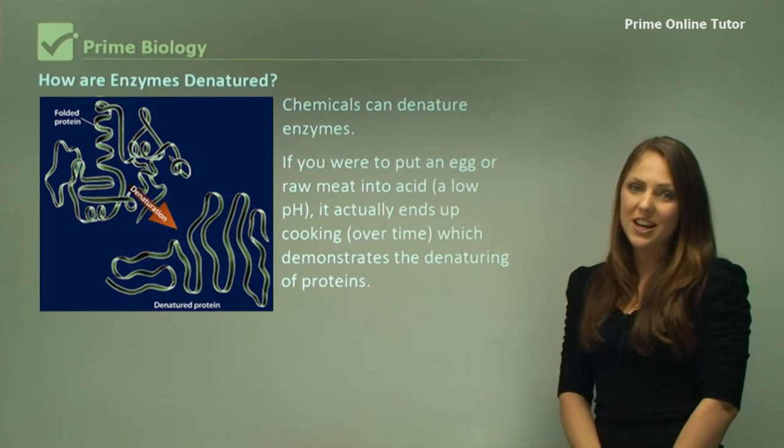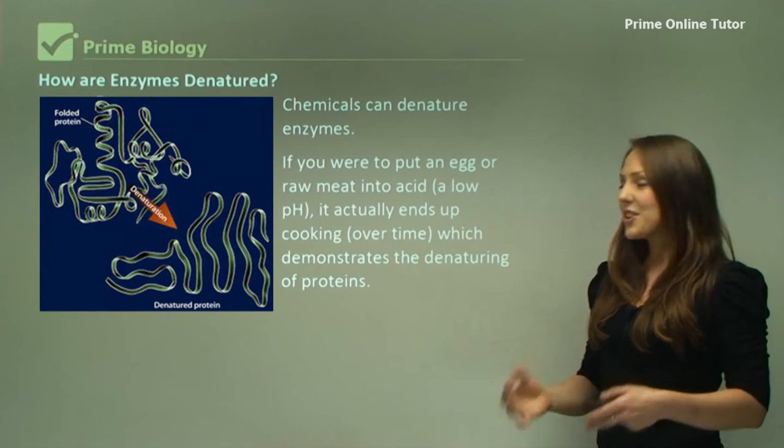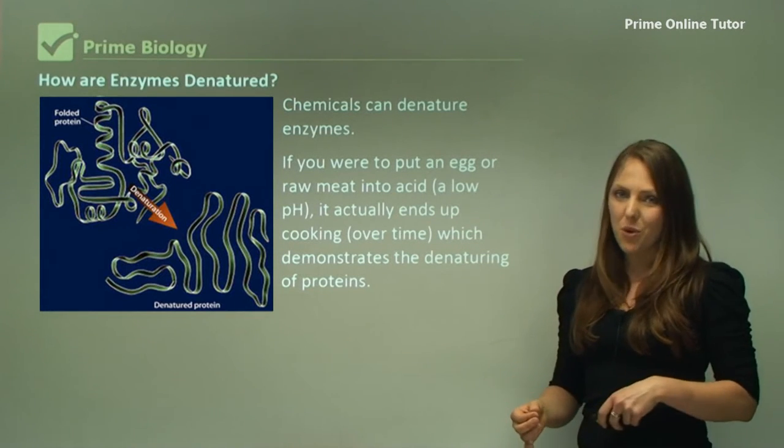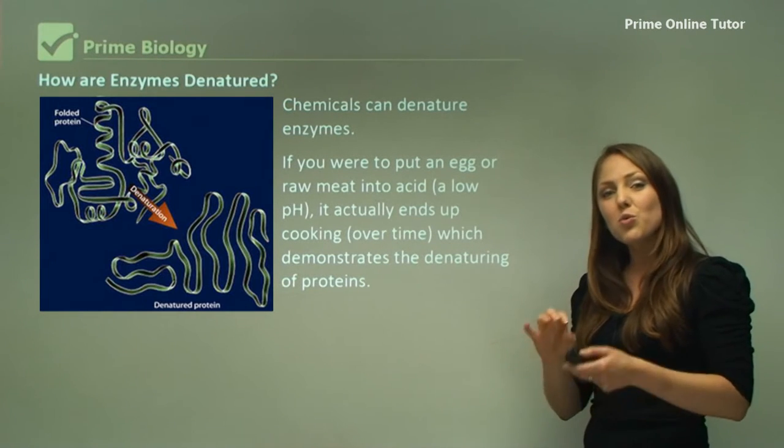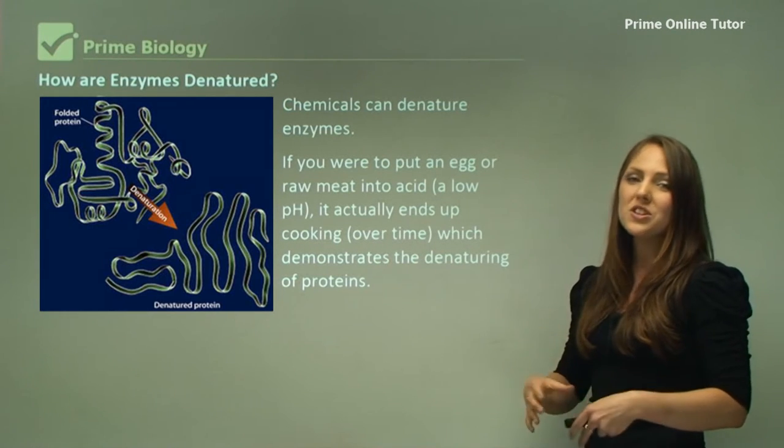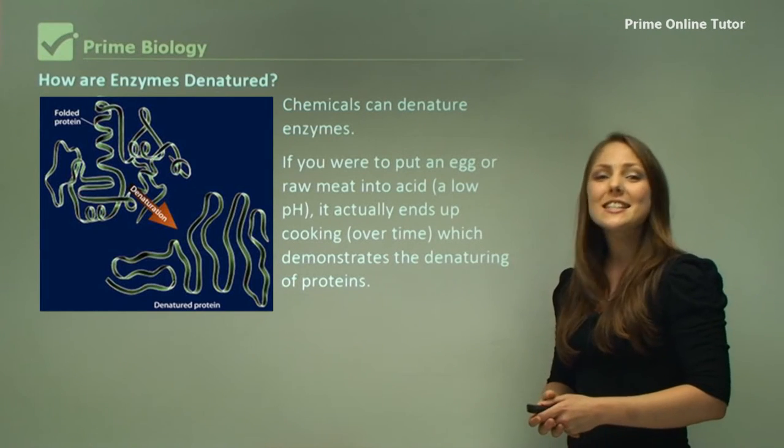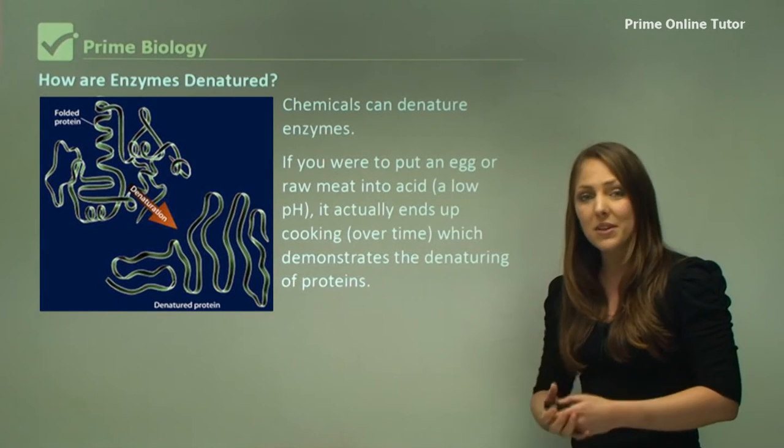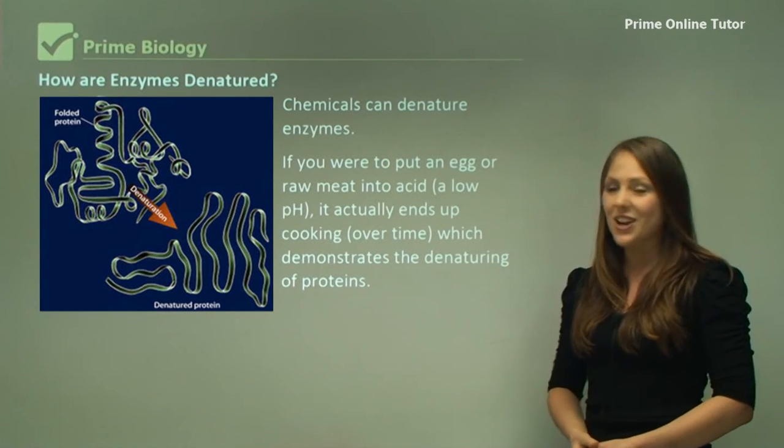Chemicals can also denature enzymes. So if you were to put an egg or raw meat into an acid it actually ends up cooking over time which demonstrates the denaturing of proteins. An example that I have had personally is I had raw chicken and I marinated it in lemon juice and some olive oil and I wanted to marinate it for a day. The next day the chicken was actually white on the outside. The acid from the lemon actually cooked the chicken. So yes chemicals can also denature enzymes.